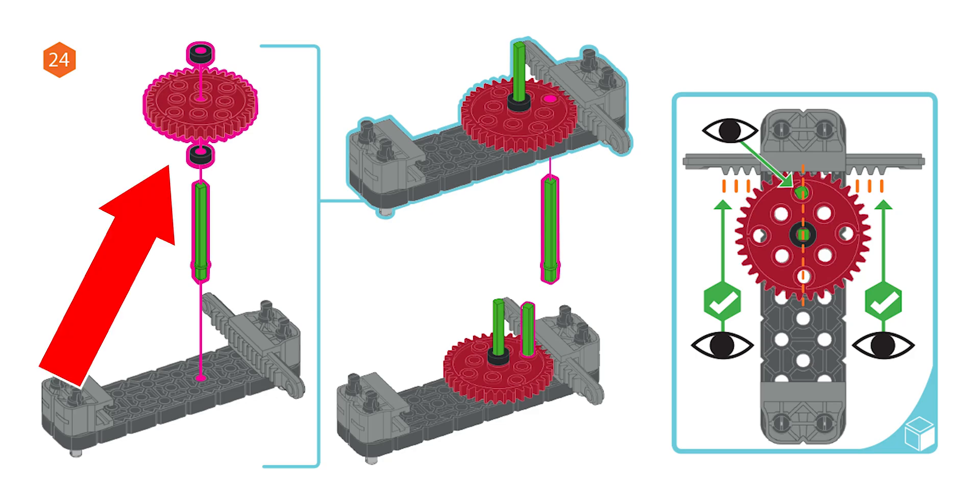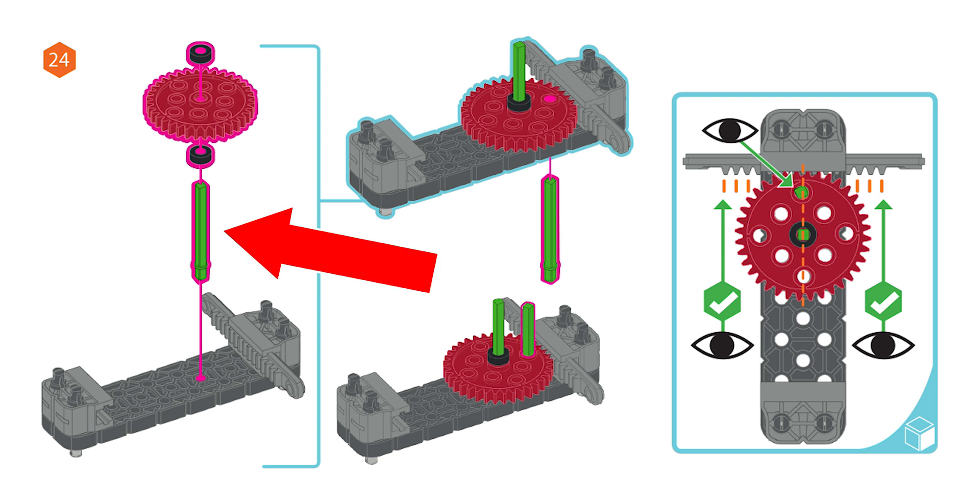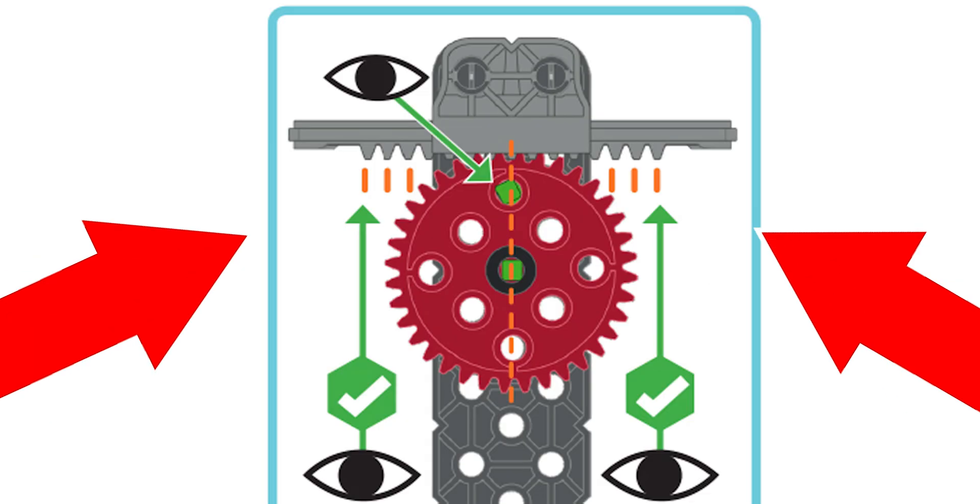Step 24: place the red gear and spacers onto the plate using a green shaft through the center. Now use another green shaft to lock the position of the gray rack gear with an even amount of space on each side, about three teeth.